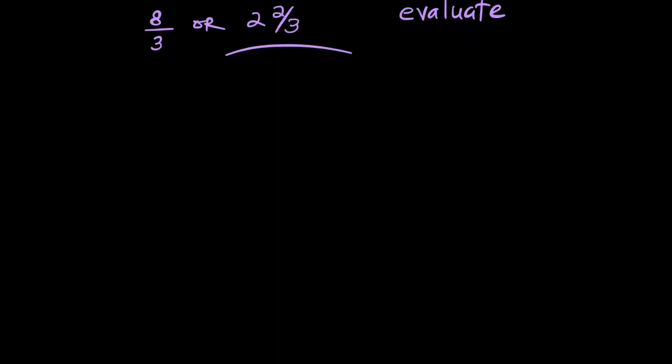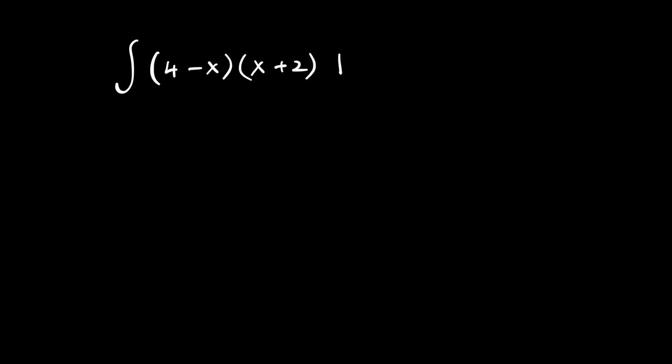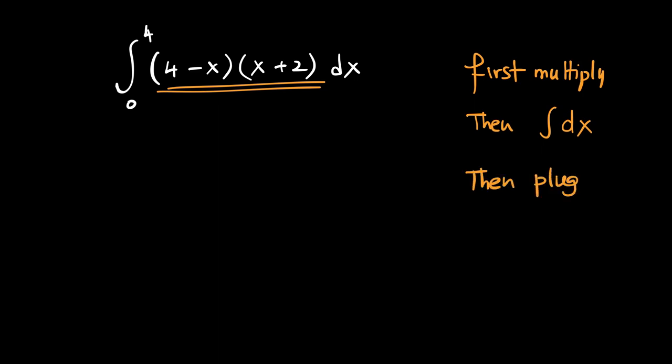Let's look at another question. Something like if we have two brackets such as 4 minus x multiplying with x plus 2 and we want to integrate it between the limits 0 and 4. The rule is first multiply and then integrate. I'm using the sign for integration and then plug in the limits.